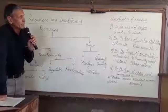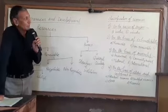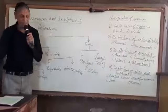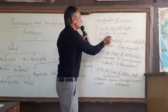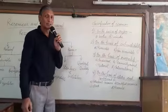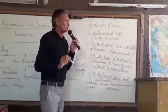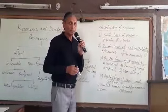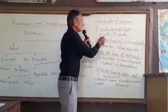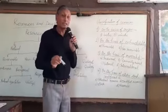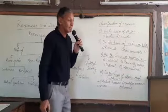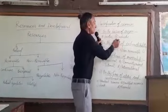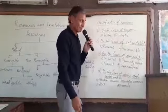Talking about classification of resources on the basis of origin, they can be classified as biotic and abiotic. All those resources which are obtained from the biosphere and have life can be termed as biotic, and all those resources which are obtained from non-living things can be termed as abiotic.